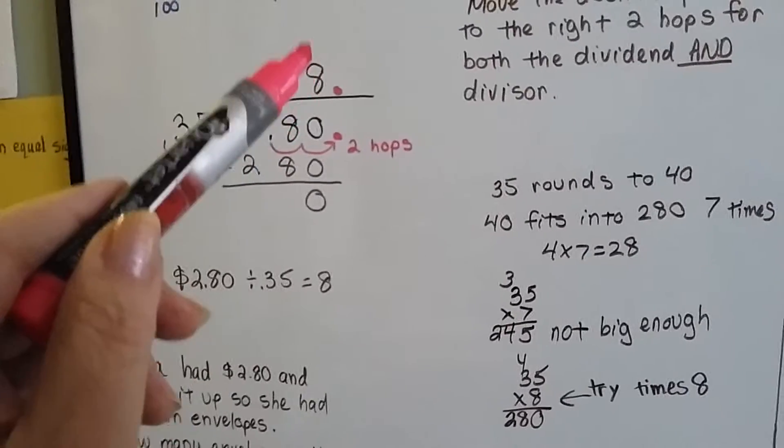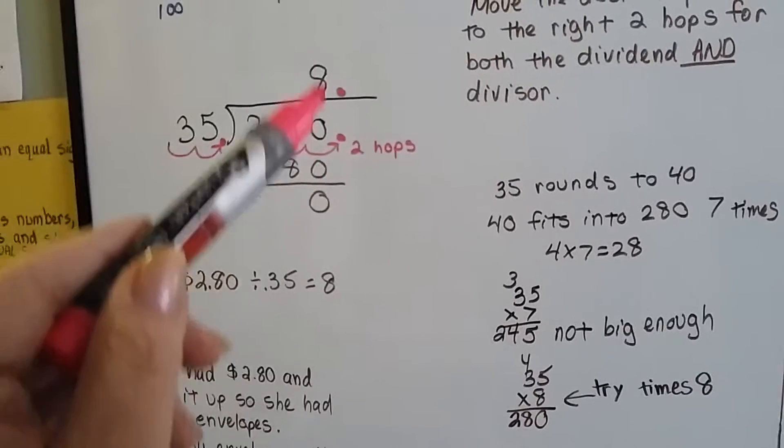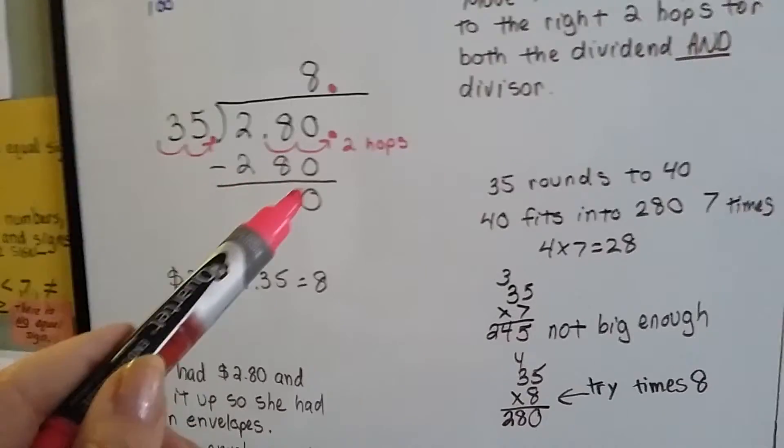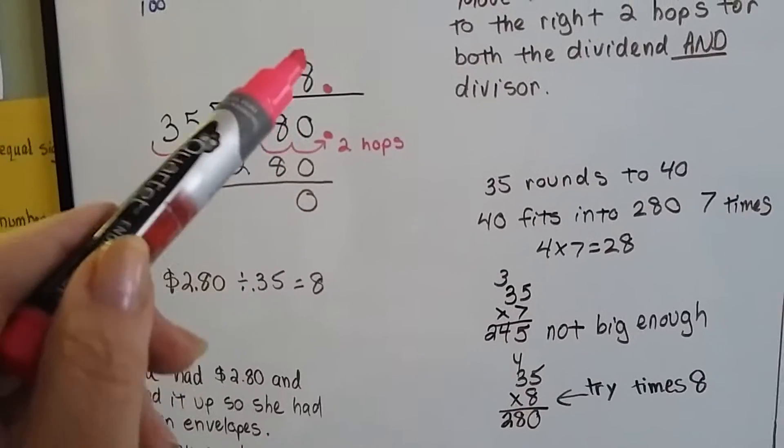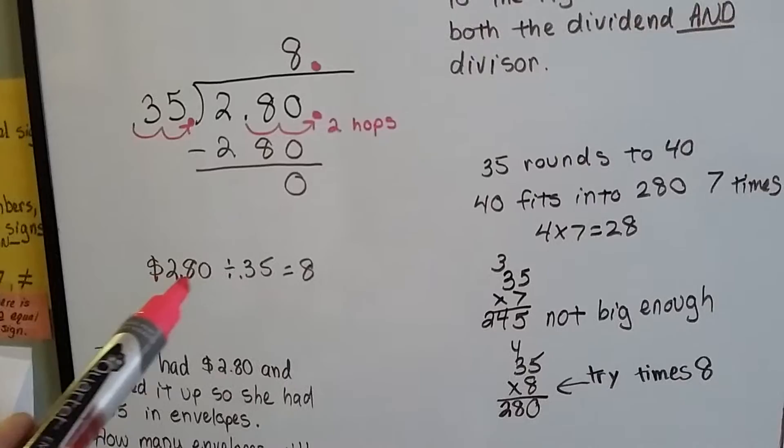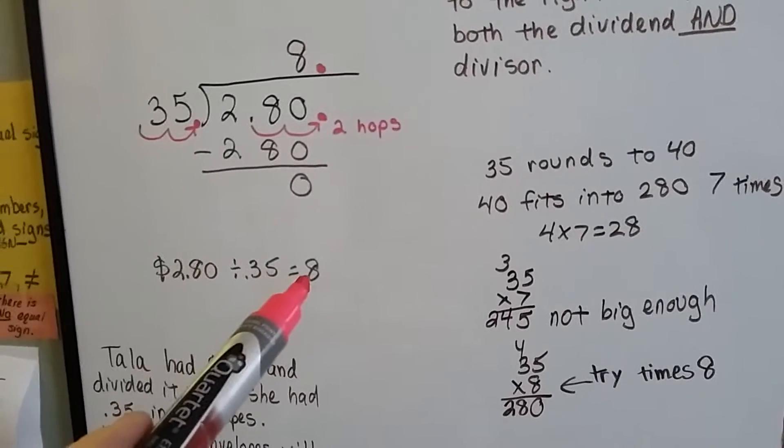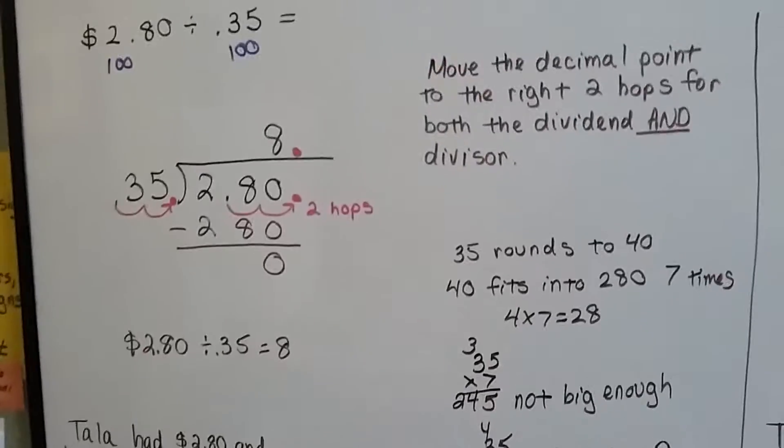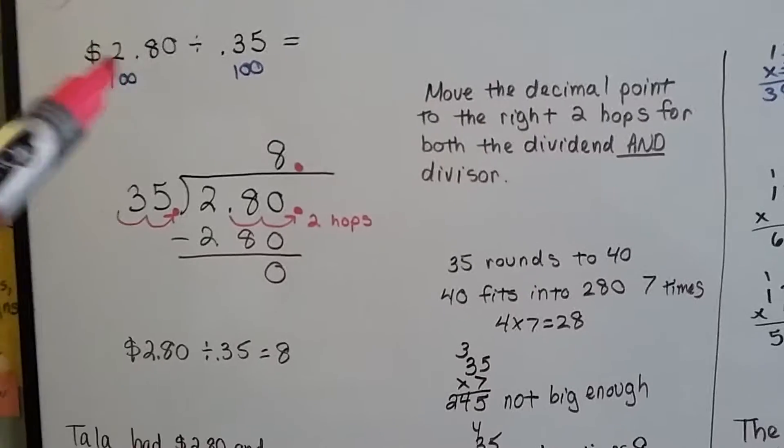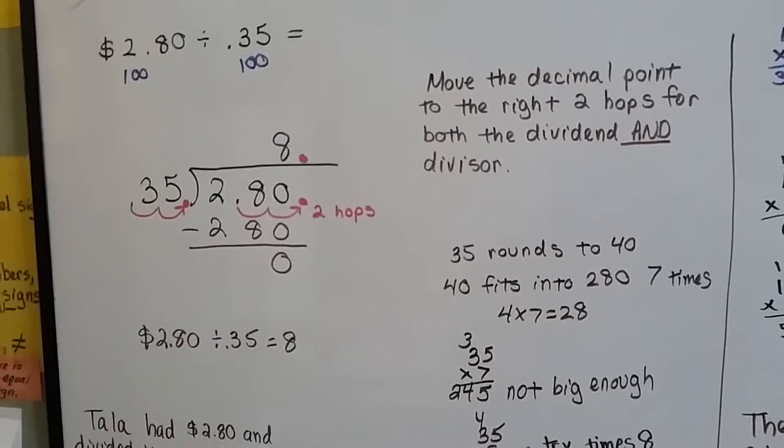Our answer goes above here because we're putting it into the 280. It goes directly above the zero for the 280. We do our subtraction to get zero, and our answer is eight. So $2.80 divided by 35 cents is eight. We move the decimal point to the right two hops for both the dividend and the divisor.